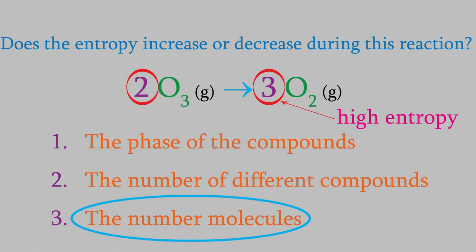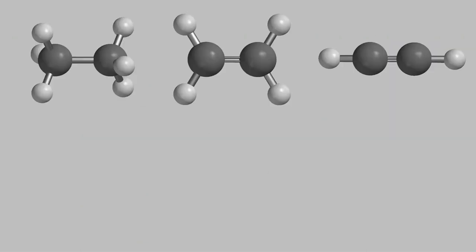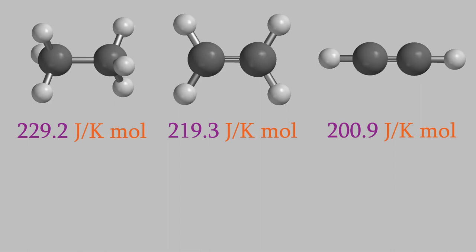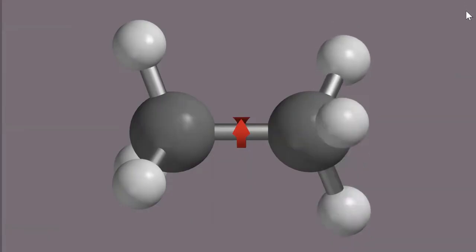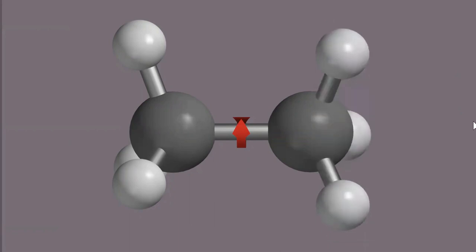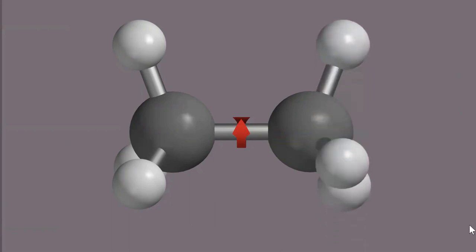The same logic applies when comparing similar molecules with different numbers of atoms. Consider the molecules ethane, ethene, and ethyne. Just as a system has a lower entropy if it contains fewer molecules, molecules have a lower entropy if they have fewer atoms. So ethyne has the lowest entropy of these three. You could also tell that ethane has a higher entropy because the carbon atoms in ethane are connected by a single bond, meaning the methyl groups have the ability to rotate and can have many different conformations, which is another reason ethane has a higher entropy than ethene or ethyne.